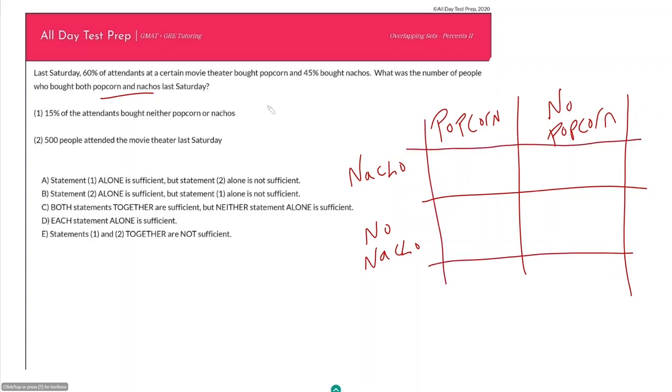And so they start off by giving us these percentages here, but then in the question they say what is the number of people who bought both popcorn and nachos last Saturday. So the fact that they're looking for a discrete number means we cannot just assume we had 100 people go to our movie theater last Saturday. I also see in the second statement they give us a discrete number of 500 people.